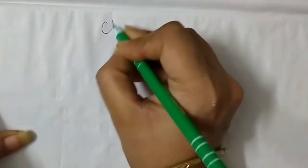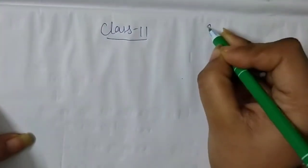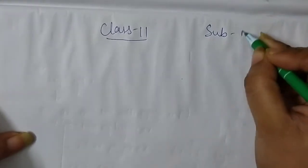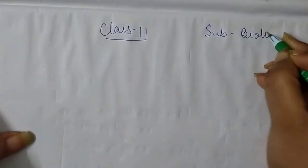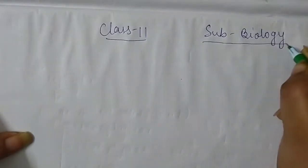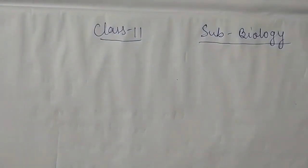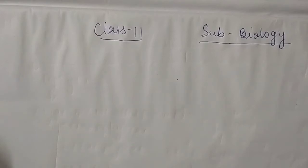Good morning to Class 11 Biology students. We are going to start our third chapter, Kingdom Plantae. We have already discussed the types of classification: artificial, natural, and phylogenetic. Before starting this chapter, I am going to tell you the classification of Kingdom Plantae according to Bentham and Hooker.